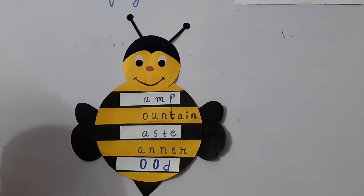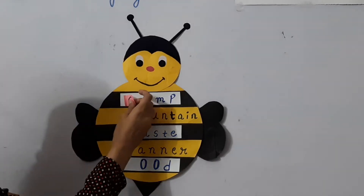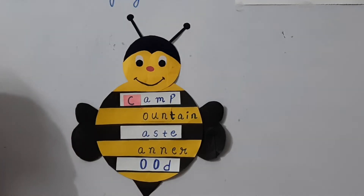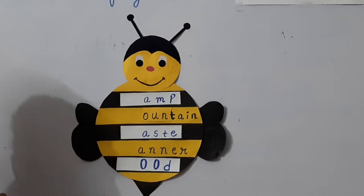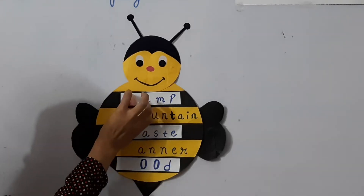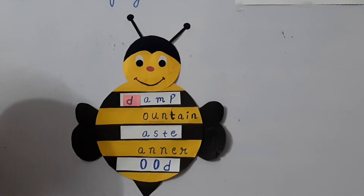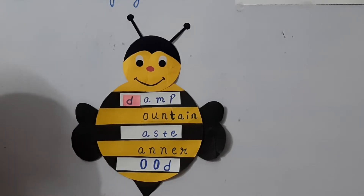Now I am going to tell you few rhyming words. The first one — if I add C, what will it become? C-A-M-P, camp. And if I add D, what will it become? D-A-M-P, damp. So camp and damp both have the same ending sounds, but their meaning is different.